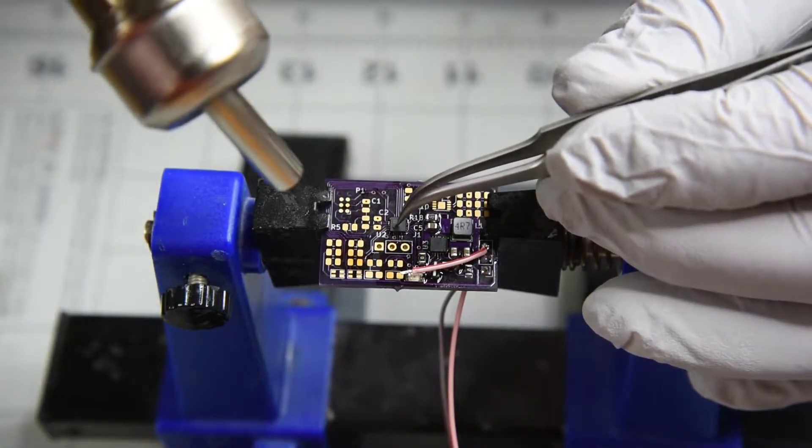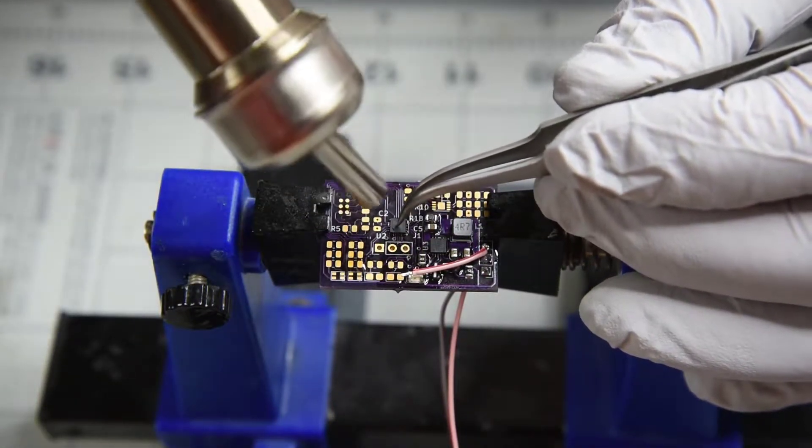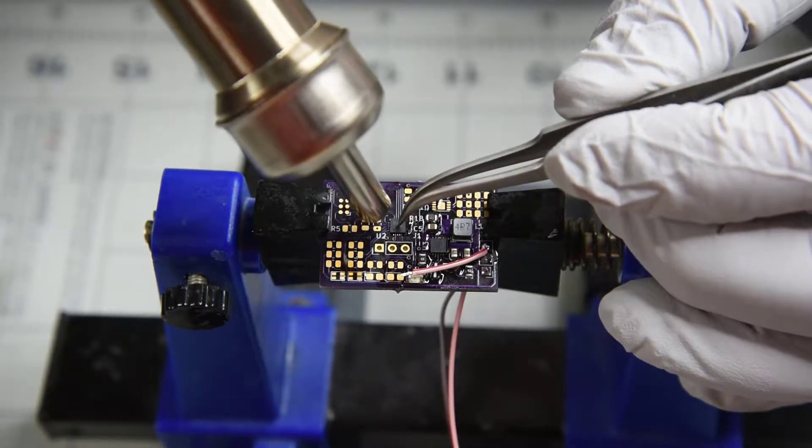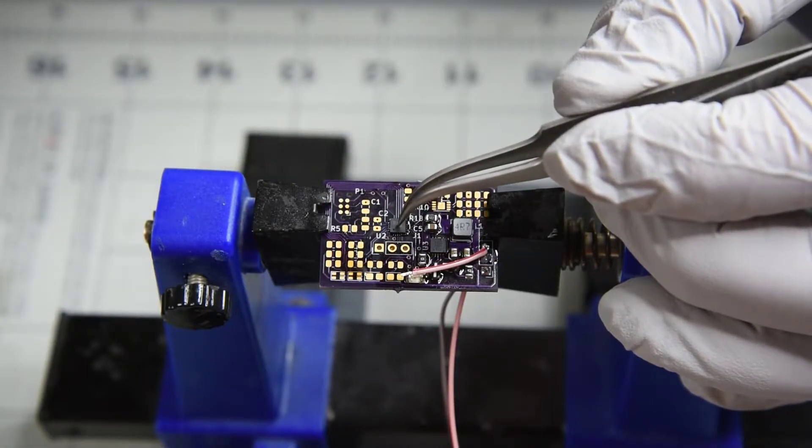So after getting most of the solder off the thermal pad, then getting the IC soldered in position, I pushed down on it while reflowing the solder. This was successful.